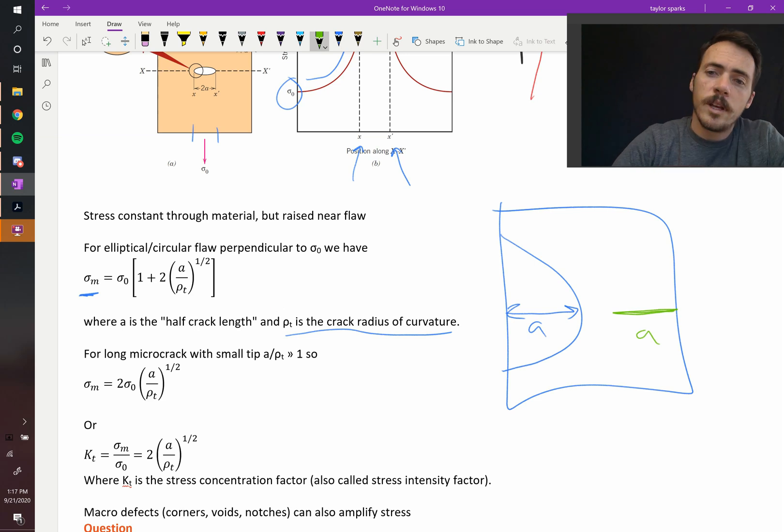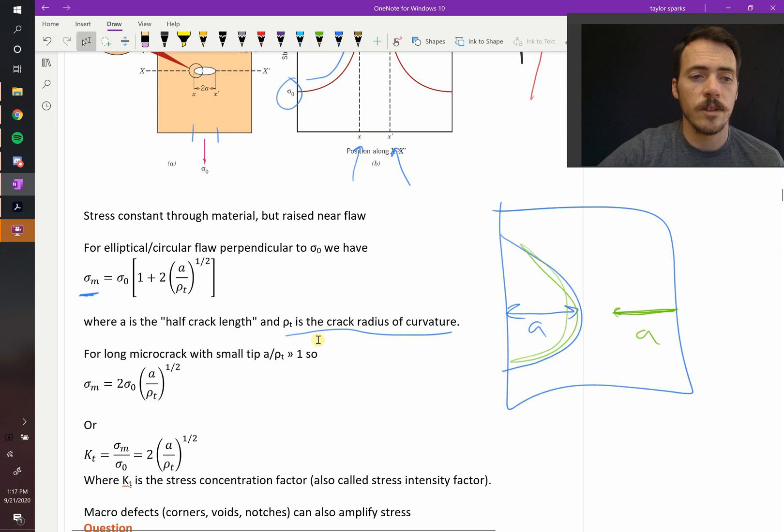But in one case, this radius of curvature is large, and in the other, it's incredibly small. And so what they found is that a sharp crack leads to a higher maximum stress in the vicinity of it.